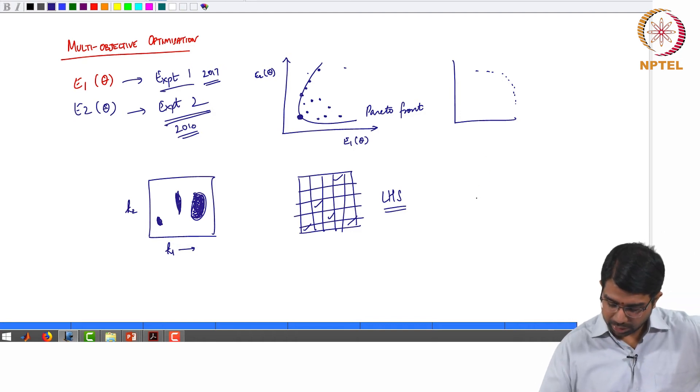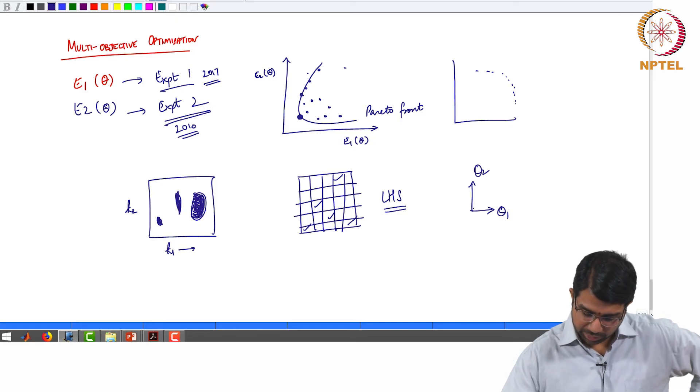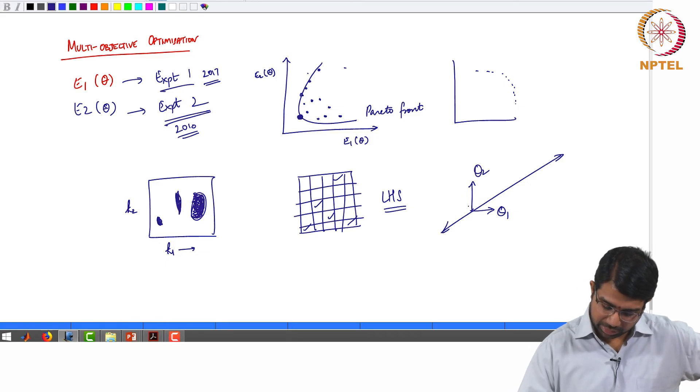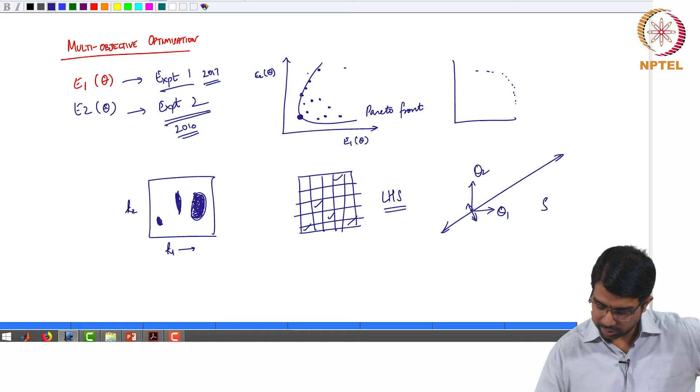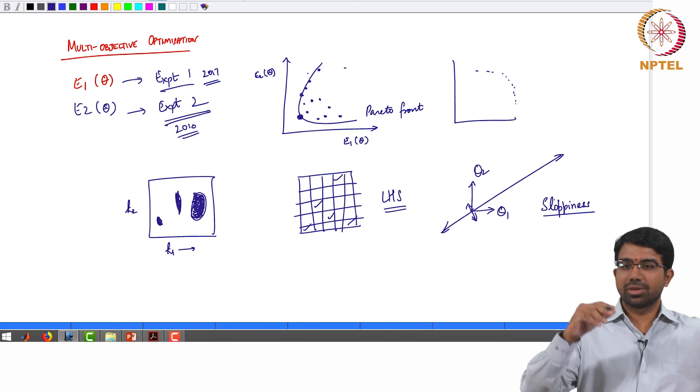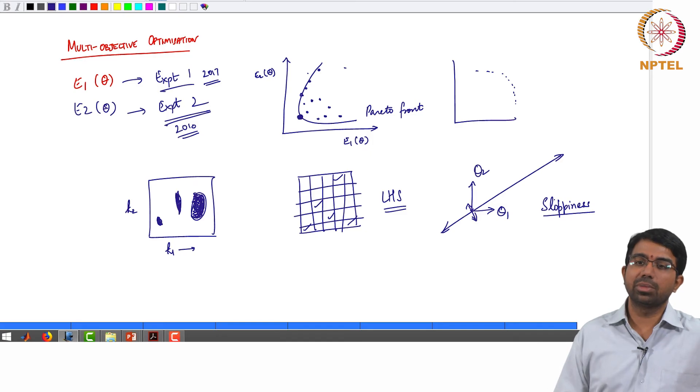One very interesting aspect is, you may find that, let us say these are 2 parameter directions, theta 1 and theta 2. You may find that your cost function varies a lot in this direction but relatively very little in this direction. So you will have to start worrying about something known as sloppiness.